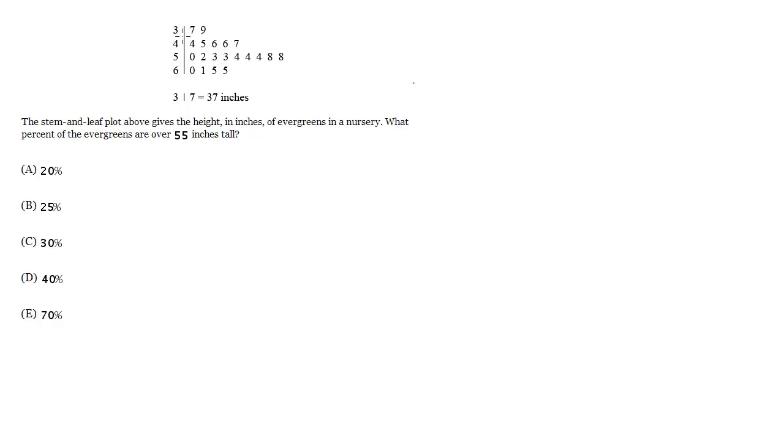So this first number here, as you can see by the key, corresponds to the tens digit of the height, and the second number corresponds to the ones digit. So when we see 3 slash 7, that corresponds to 37. So 3 slash 7, this one would be 37 inches, and then 3 slash 9, this one is 39 inches.